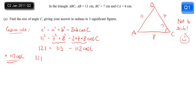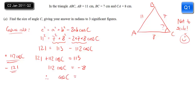That means on the left we have 121 plus the 112 cos C, and on the right I simply have 113 left. Now I want to get rid of that 121, so I'll subtract, leaving just 112 cos C on the left, and 113 minus 121, so minus 8 on the right. Finally, divide by 112, and we've isolated cos C as minus 8 over 112.